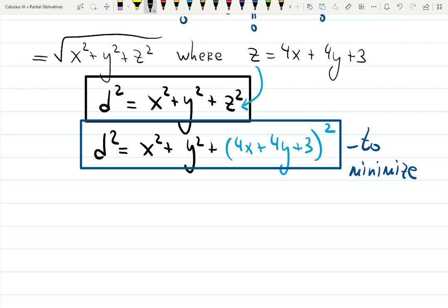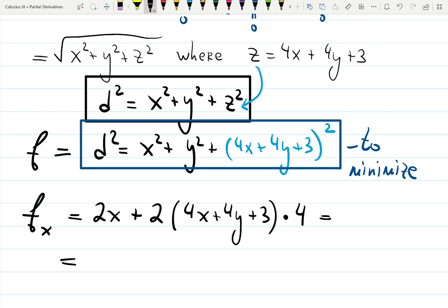Let's find the partial derivative with respect to x. I'm going to have 2x, plus 2 times the whole thing (4x plus 4y plus 3) times the derivative of (4x plus 4y plus 3), which gives 4. Now it's easy to simplify: 2x plus 8x gives 10x.